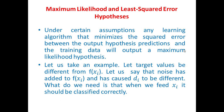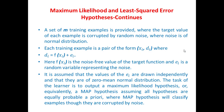Let us consider an example. Let target values be different from f(xi), where f(xi) is supposed to be the target. Let us say that noise has been added to f(xi) and has caused di to be different. What we need is that when we feed some xi, it should be classified correctly regardless of the addition of noise. A set of m training examples is provided where the target value of each example is corrupted by random noise, where noise is of normal distribution. Each training example is a pair of the form (xi, di).